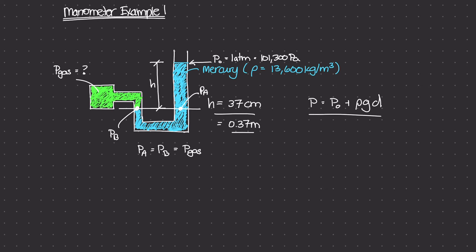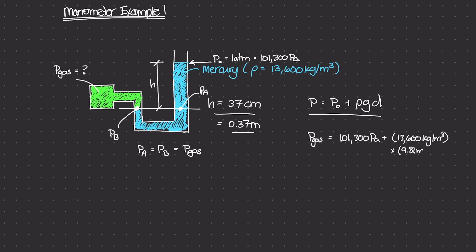So the pressure of the gas equals p₀, which is 101,300 pascals, plus rho — the mass density of mercury, 13,600 kilograms per meter cubed — times gravity, 9.81 meters per second squared, times d, which is h = 0.37 meters. Plugging this into a calculator, the pressure of the gas is about 150,664 pascals, which is about 150.7 kilopascals.